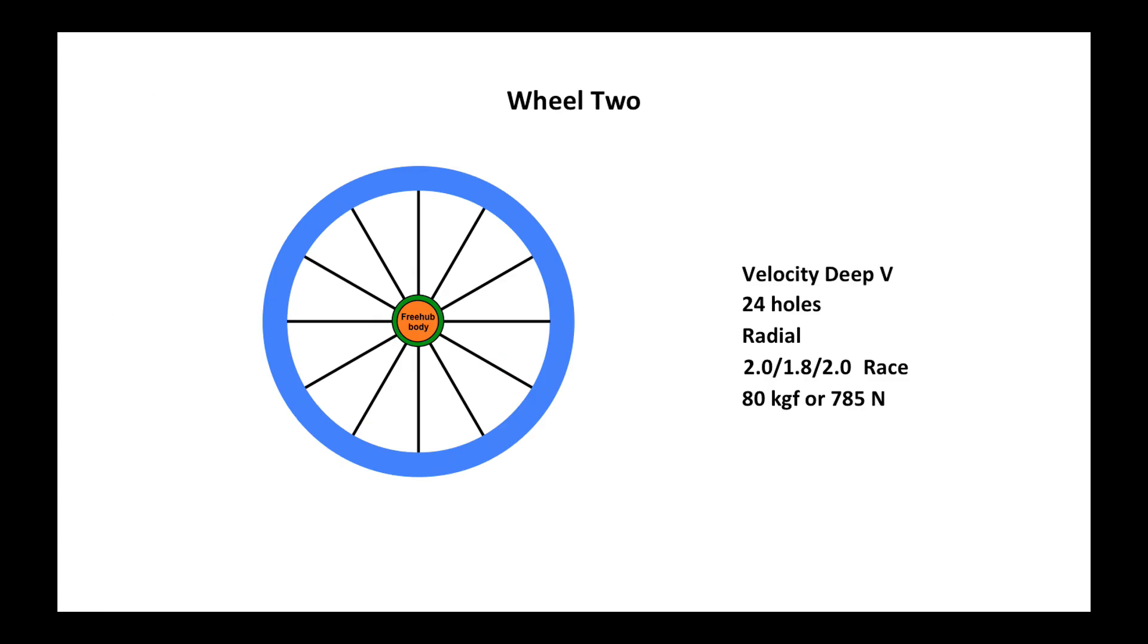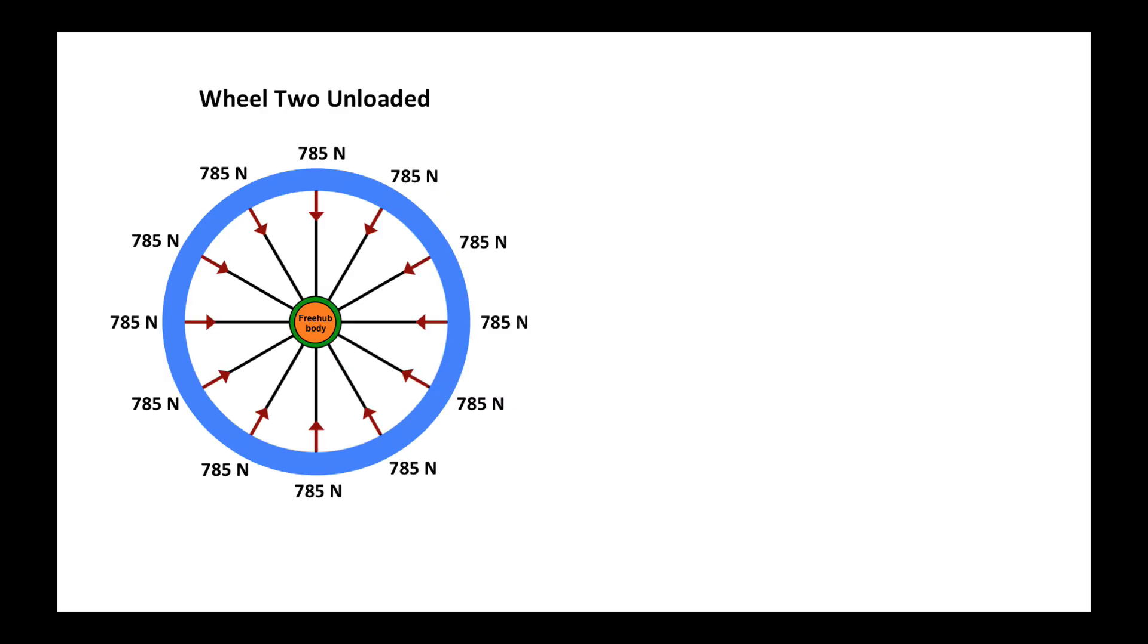Here is wheel two, the same number of spokes, low tension, but here I'm using race spokes, double butted spokes, instead of straight gauge. Our starting tension for wheel two is 785 newtons, which is about 80 kilograms of force.